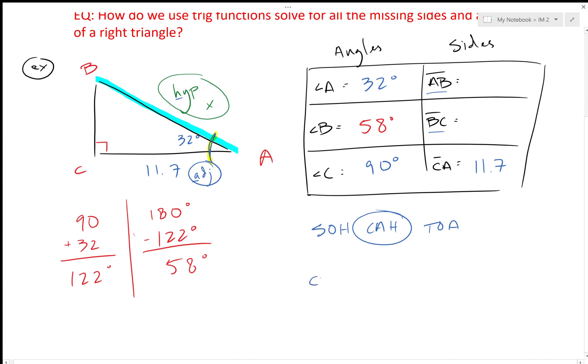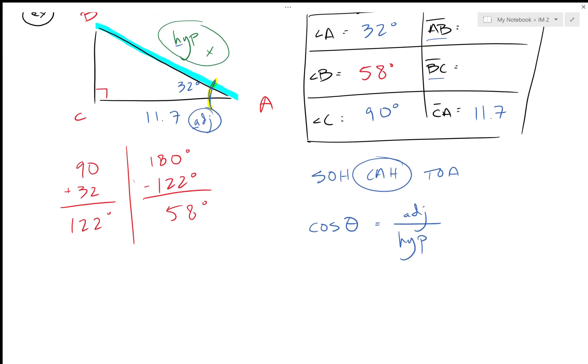So the cosine of theta is adjacent over hypotenuse. Now let's fill it in. Remember theta is just a letter, and in this case theta is the angle which is 32 degrees, equals the adjacent 11.7 over the hypotenuse X.